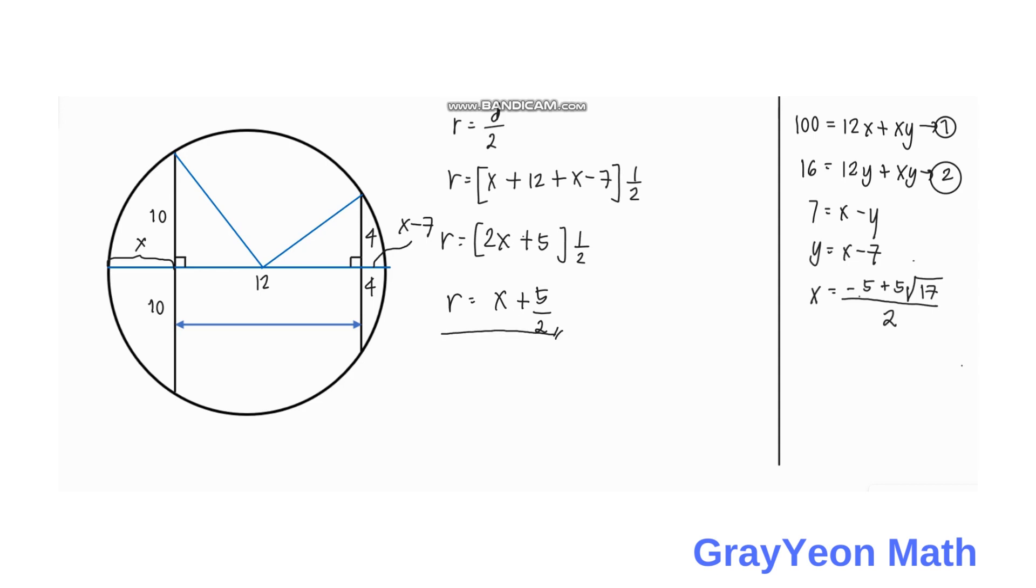Since we know X, radius is equal to negative 5 plus 5 square root of 17 all over 2, plus 5 halves. We can put this in the same denominator which is 2. Negative 5 and 5 cancels out, and it gives us the radius to be equal to 5 square root of 17 all over 2 units, and that is our answer.